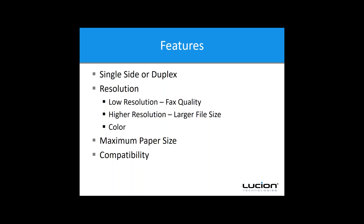A flatbed can get really tedious if you're scanning one page at a time or documents are more than a few pages. Tax returns can be really large, so if you're scanning more than one page at a time, you'll want to look at an automatic document feeder. This allows you to put a large number of documents into the feeder and walk away for a minute or two. Most scanners hold about 50 to 65 pages in their hopper.